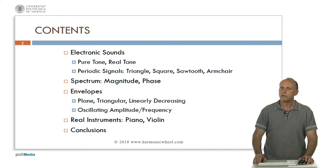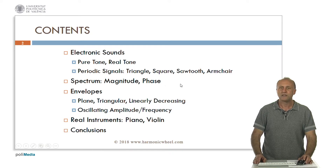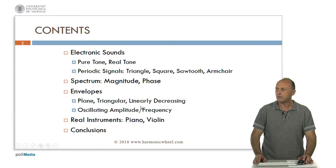We will start with very simple sounds which are electronic, such as the pure tone and the real tone, and then other periodic signals such as triangle, square, or sawtooth, and a new one developed by me called Amchea. The spectrum has two characteristics: the magnitude and the phase. We will explain what is the envelope of a sound and how it affects the spectrum. We will consider different types of envelopes: plain, triangular, linearly decreasing, and also oscillating amplitude and frequency.